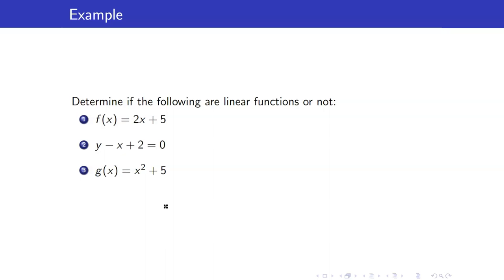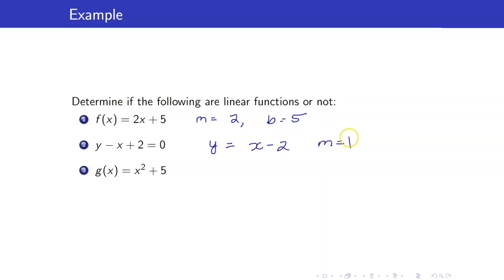Let us determine if the following are linear functions or not. Number 1: yes, it is a linear function — m = 2 and b = 5. Number 2: y - x + 2 = 0. Yes, because we can rewrite it as y = x - 2, which means m = 1 and b = -2. Remember that m is the coefficient of x. Number 3: g(x) = x² + 5. No, this is not a linear function because the highest exponent of x is 2. For linear functions, the highest exponent must always equal 1.